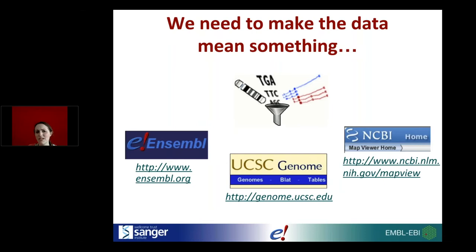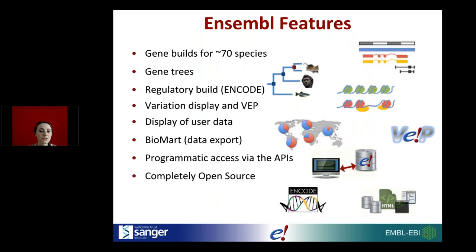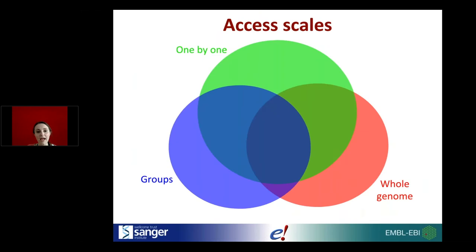Everyone has different preferences as to which browser they like to use, usually depending on which one they started with or received training on. Ensembl has many features: gene builds for about 70 species, gene trees, a regulatory build incorporating data from sources such as ENCODE, Blueprint, and Roadmap Epigenomics, ways to look at variation data, the BioMart tool for data export, programmatic access via APIs, and we are completely open source.